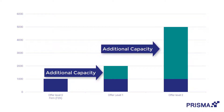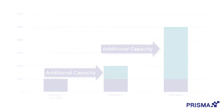This allows the TSO to see how an expansion of their capacity would be accepted by the market for the different capacity scenarios they are considering. The successful offer level auction is used as an input for the economic test the TSO performs separately, and is then communicated to participating shippers.